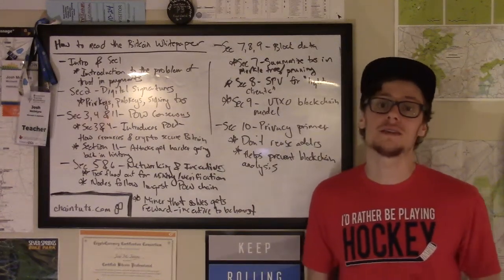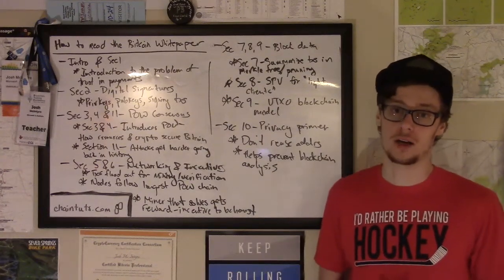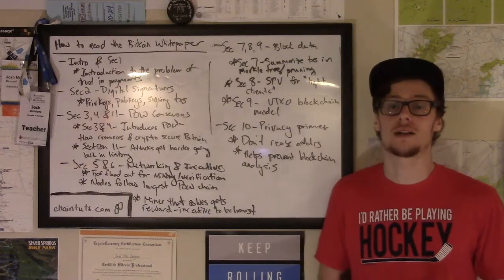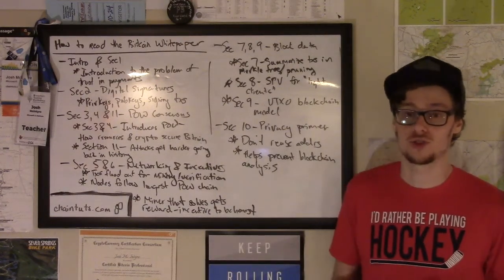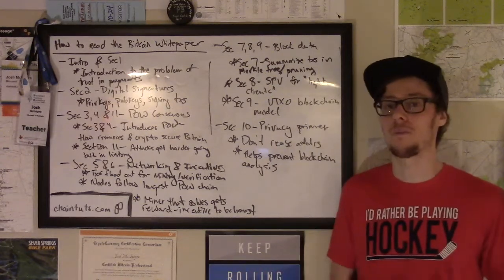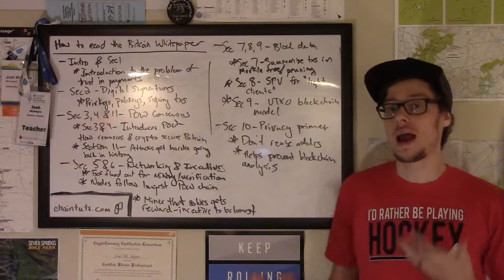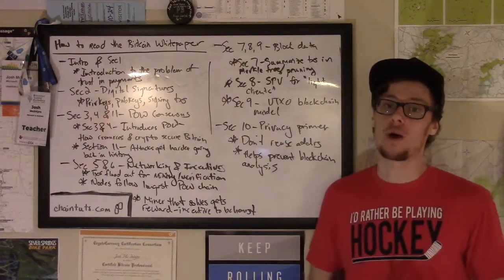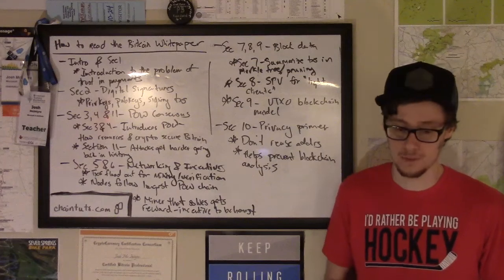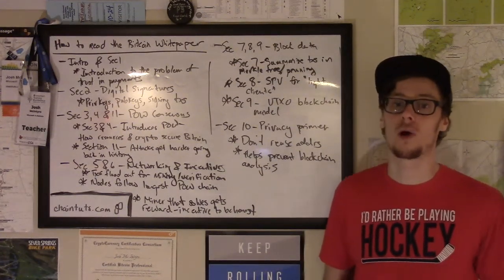The problem is, this doesn't solve our double spend problem that we were talking about earlier. You could essentially create a completely valid transaction with a valid digital signature twice and send the same money to two different people. So sections three, four, and 11 of the Bitcoin white paper go into solving this double spend problem. These are the sections that introduce what's called proof of work consensus.